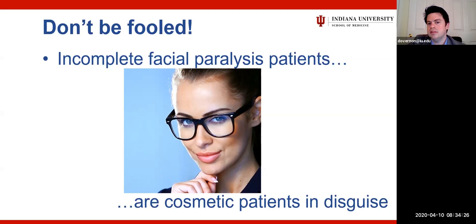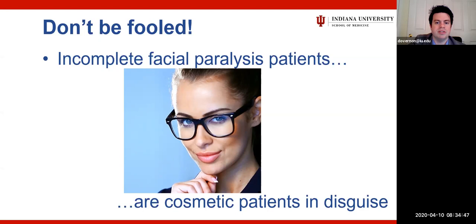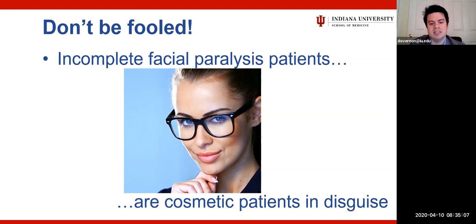My final point: don't be fooled — incomplete facial paralysis patients are cosmetic patients in disguise. They don't have the same functional deficits as complete paralysis patients; their eye is generally protected, and they don't have oral incompetence. They come to you because they're self-conscious about their appearance. Treatment should be individually tailored. Many of these patients were shocked by their initial Bell's palsy presentation, and in their minds they still picture themselves as severely disfigured, when in reality part of our job is helping them realize they're not as asymmetric as they think — while offering the tools available to help them further.